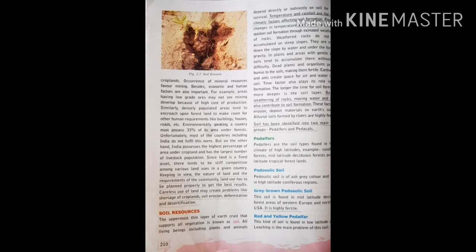The uppermost thin layer of the earth's crust that supports all vegetation is known as soil. All living beings, including plants and animals, depend directly or indirectly on soil for their survival. Temperature and rainfall are the main climatic factors affecting soil formation. Frequent changes in temperature and presence of water quicken soil formation through increased weathering of rocks. Weathered rocks do not accumulate on steep slopes — they are moved down the slope by water and gravity. Moving water and winds also contribute to soil formation.